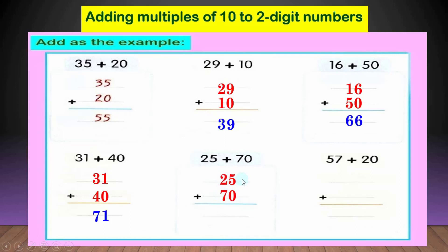احنا بقى ناس شطار! مش لازم اقول 5 plus 0 equal 5. دايما على طول اول ما شوفي الـ 0، يبقى الـ number will be down - ينزل زي ما هو. يلا يبقى الـ 5 will be down. ودي 2 tens plus 7 tens: بعد 7، 8، 9. يبقى الانسر طلع 95.